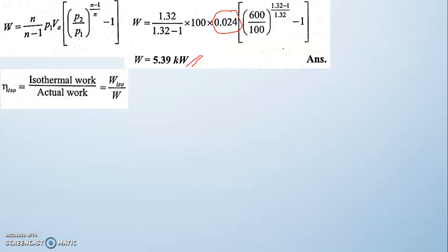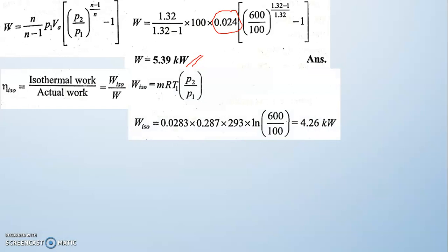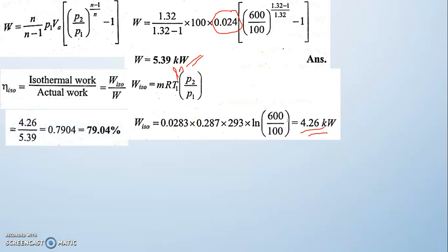Isothermal efficiency is the ratio of isothermal work to actual work. Isothermal work = m·R·T1·ln(P2/P1). Substituting m, R = 0.281, T1, and ln(600/100) gives isothermal work = 4.26 kW. Isothermal efficiency = isothermal work / actual work = 4.26 / 5.39. Note that for compressors, actual work is greater than isothermal work — the opposite of heat engines.